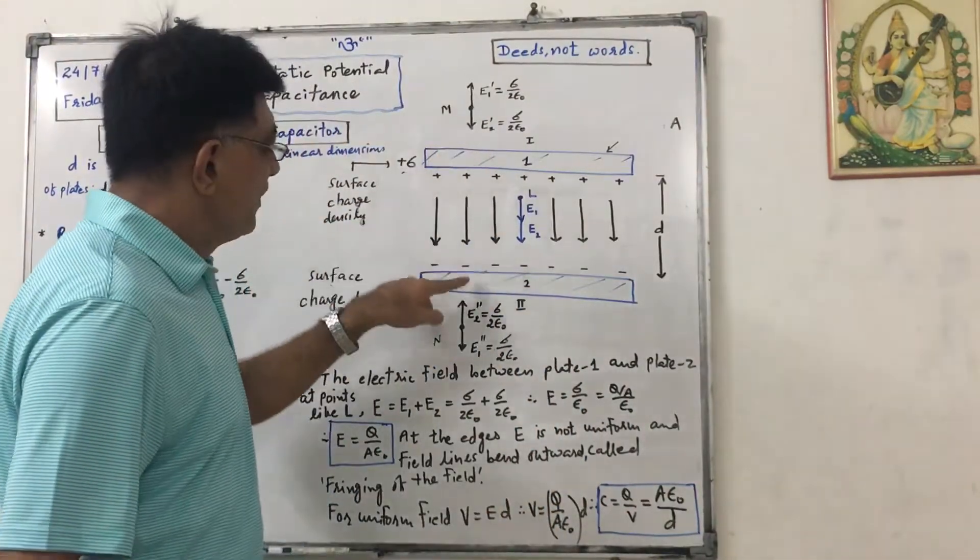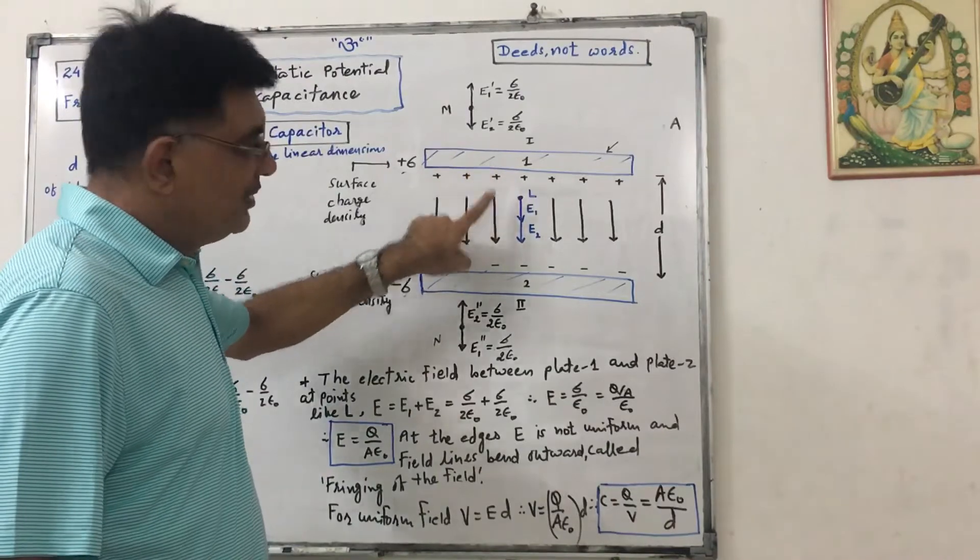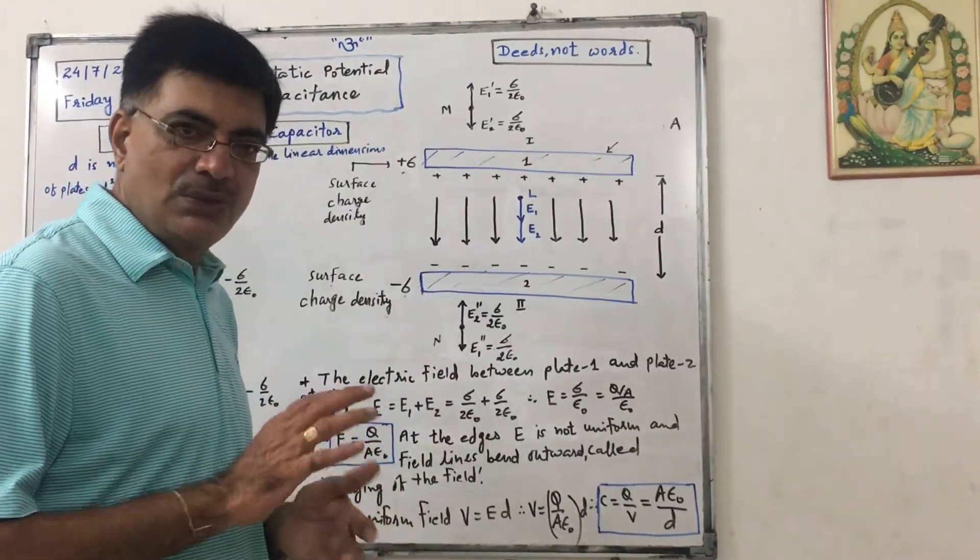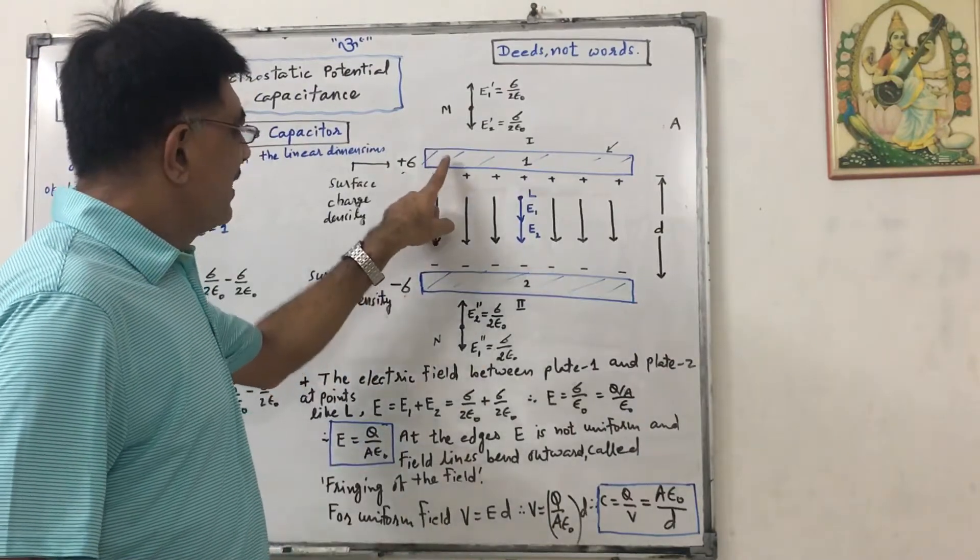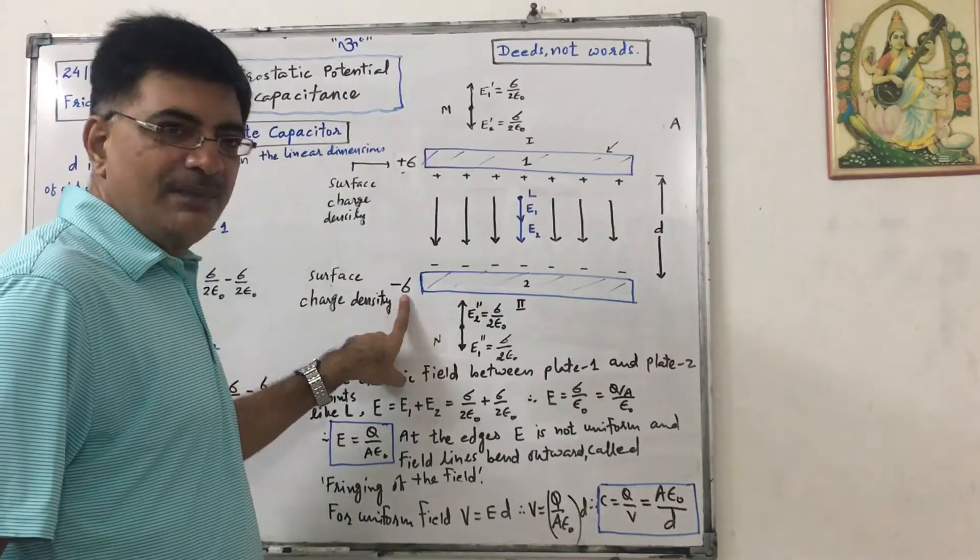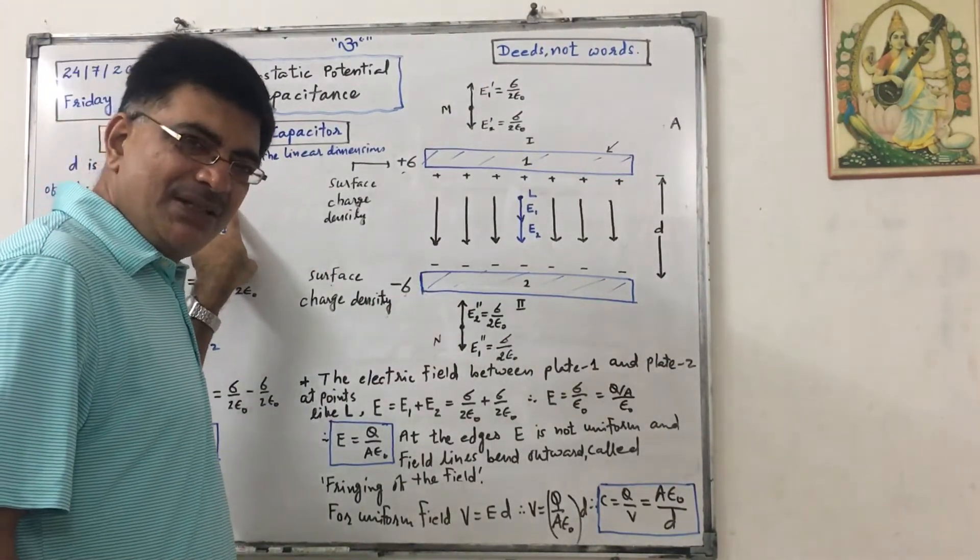So these are two plates. The total charge here is plus Q, here is minus Q, so we know that net charge on capacitor is zero. Surface charge density of this plate is plus sigma and for this plate it is minus sigma. Magnitude of sigma is Q by A, charge upon area.